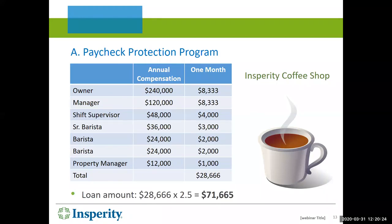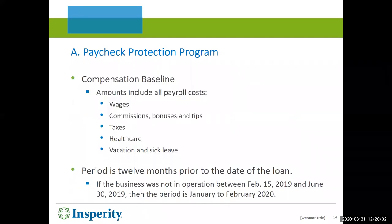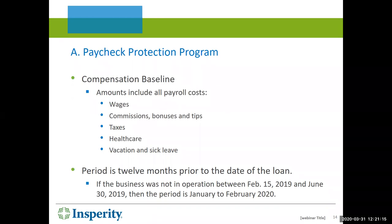The defined term is payroll costs, and it includes wages, commissions, bonuses, tips, the taxes paid on employee wages, the cost of the employer contribution toward the health care plan, and any vacation or sick leave. For most people, you will measure your average payroll costs for the 12 months prior to the origination date of the loan when it's approved. So you may want to think about pulling that information together even now.